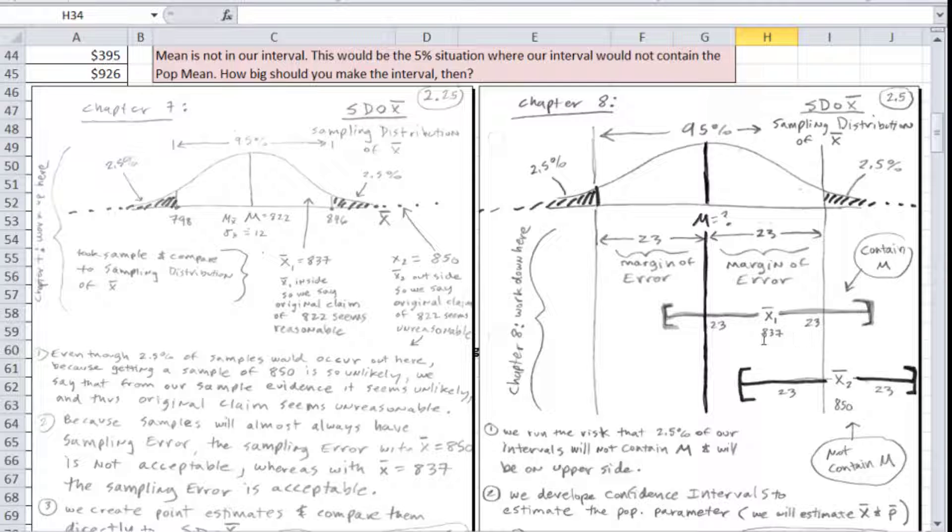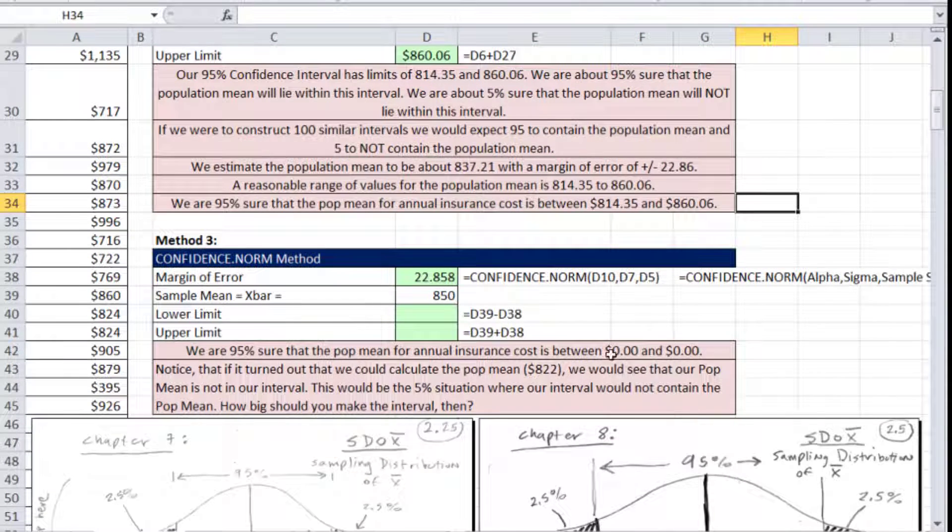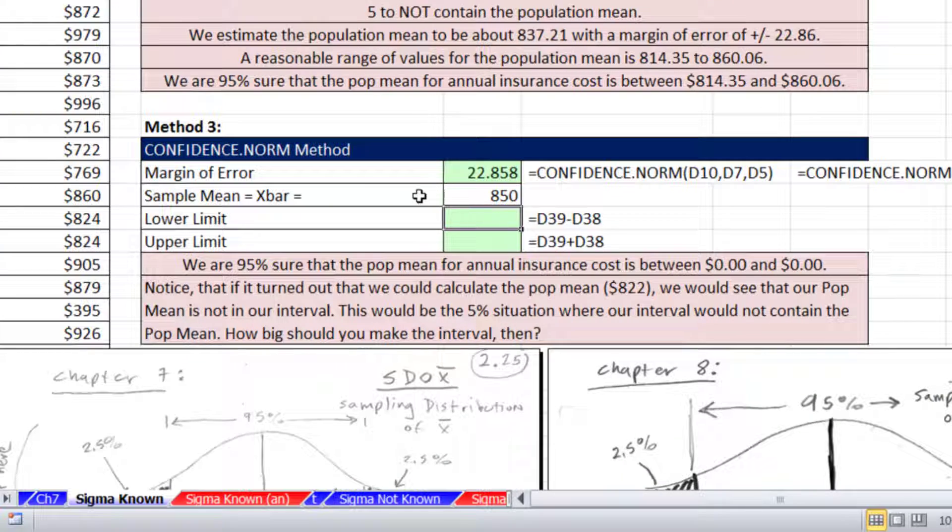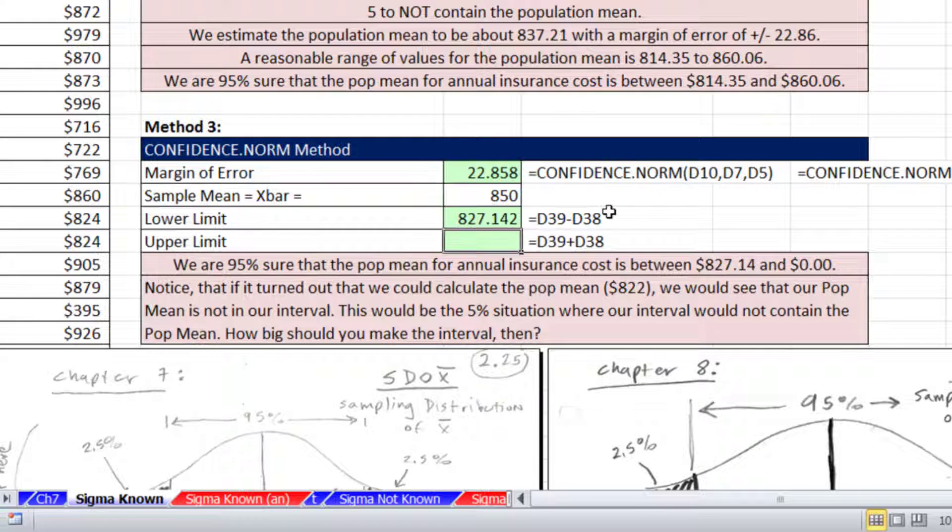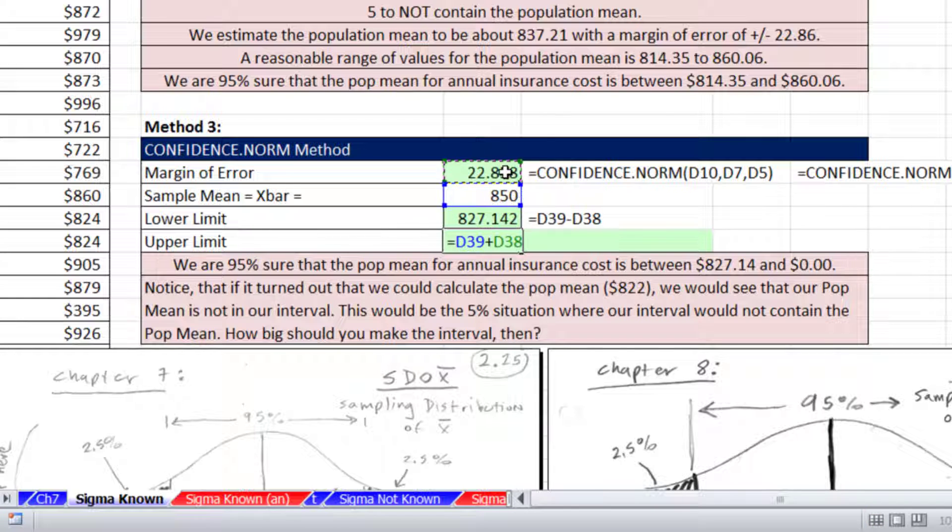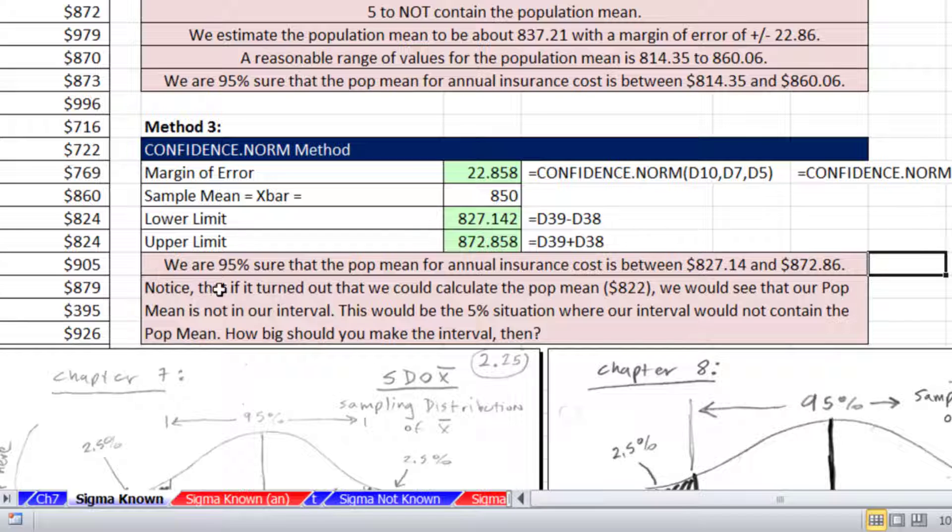This is what we did in chapter 7. We did x̄'s and directly compared them to the sampling distribution of x̄. In chapter 8, we're creating confidence intervals, and 95 of them should contain the population parameter and 5 of them not. Let's say we had an x̄ of 850. So here we calculate this interval. 850 minus our margin of error. That's the same margin of error we just calculated. And then 850 plus. So we say we're 95% sure that the population mean for annual insurance cost is between 827 and 872.